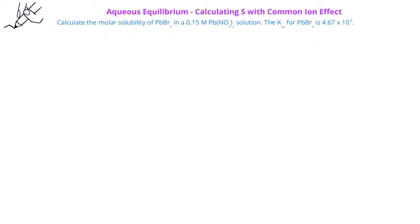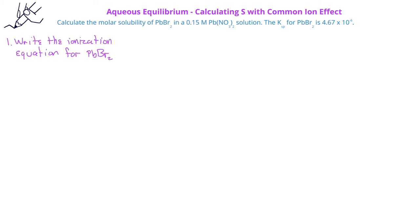In this problem, we're asked to determine the molar solubility of lead-2 bromide in a 0.15 molar solution of lead-2 nitrate. We're given that the Ksp for lead-2 bromide is 4.67 times 10 to the minus 6. We begin the problem by writing the ionization equation for the compound whose molar solubility we want to find — in this case, lead-2 bromide.